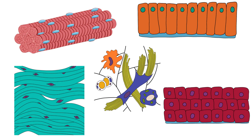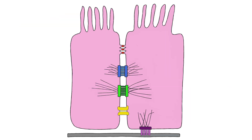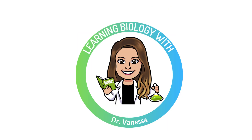Tissues are more than cellular groupings — they are organized, cooperative networks that form the foundation of every organ and system in your body. And without cell junctions, these tissues would fall apart, literally and functionally. Together, they maintain the structure and harmony needed for life. Understanding tissues and cell junctions gives you a window into how the body is built and how it stays together, on both a physical and cellular level.